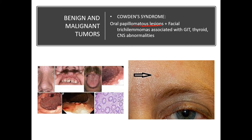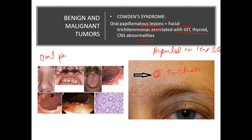Now Cowden syndrome. In Cowden syndrome there are tumors — oral papillomatous lesions. There is also facial trichilemmoma. Trichilemmoma is typically present as a solitary papule or mass of small skin-colored papillomatous lesions — you can see this papillomatous lesion here. Cowden syndrome is also associated with GIT, thyroid, and CNS abnormalities. The main thing to remember is oral papillomatous lesion and trichilemmoma.